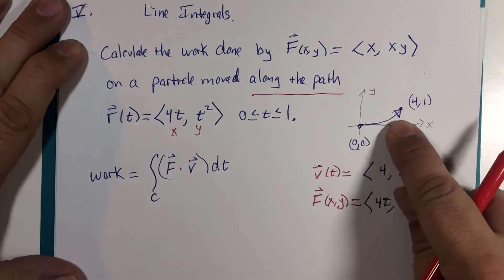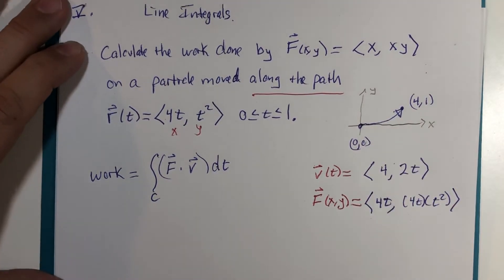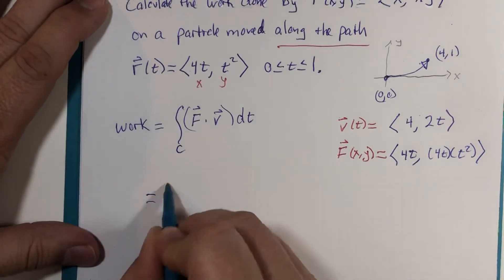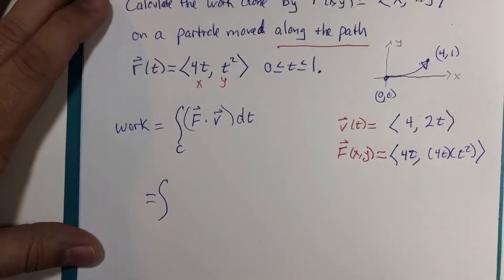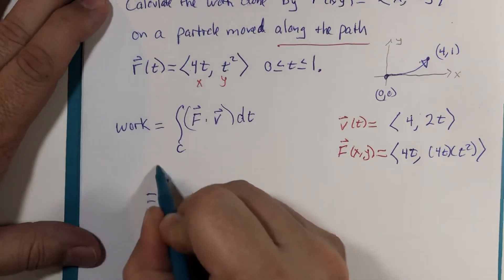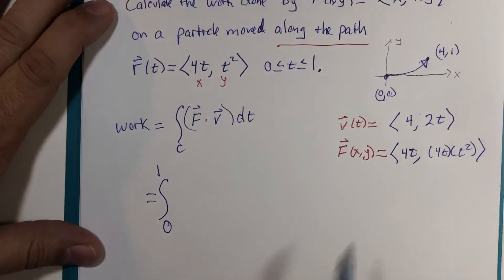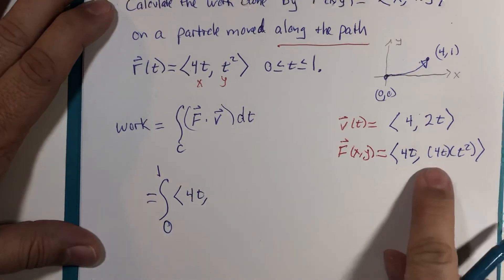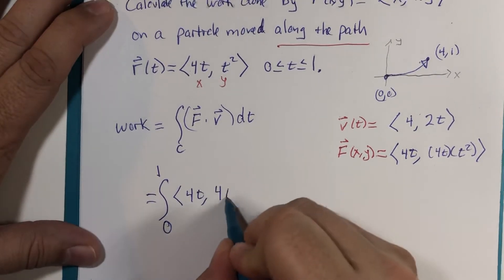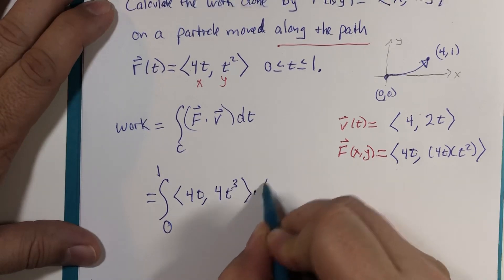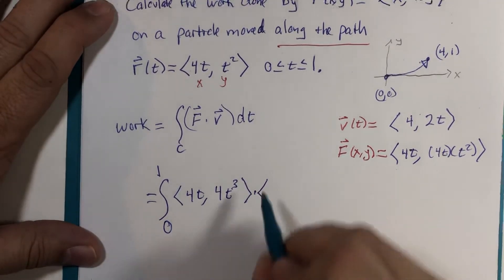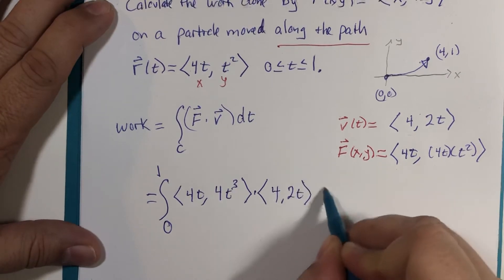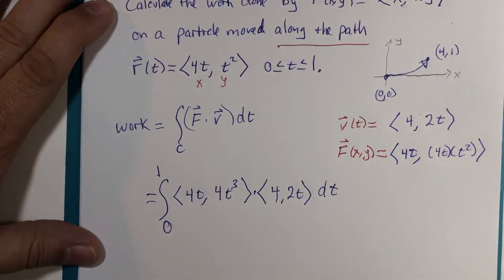So let's do some final setup here. t is given to be 0 to 1, the vector field F(t) = <4t, 4t³> dot product velocity vector <4, 2t>, dt. All right, if I only ask you to set up a type of line integral, I would let you end here.